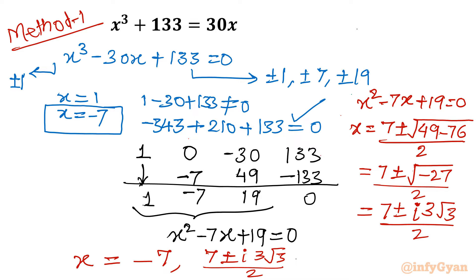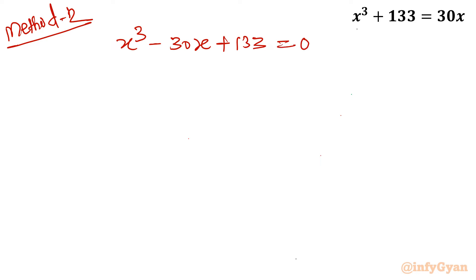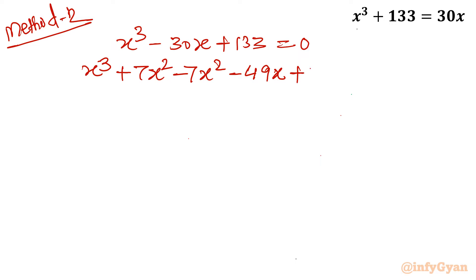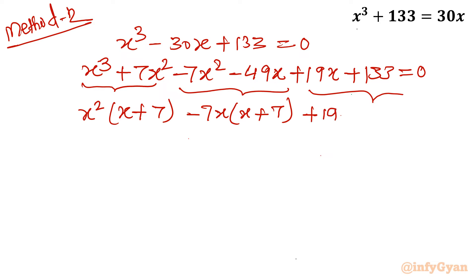Method number 2 uses factorization. Writing the equation x cubed minus 30x plus 133 equal to 0, we add and subtract 7x squared, then rewrite minus 30x as minus 49x plus 19x, keeping 133 as is. From the first two terms we factor out x squared, giving x plus 7. From the next two terms we factor out minus 7x, giving x plus 7. From the last two terms we factor out 19, giving x plus 7.